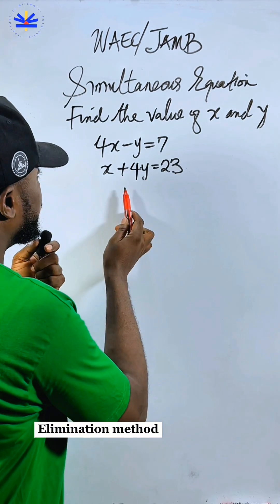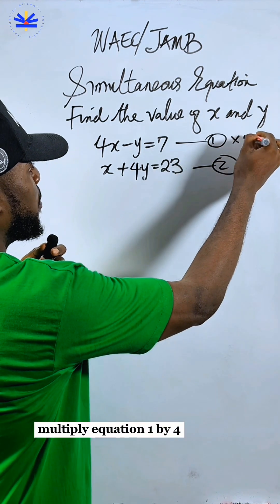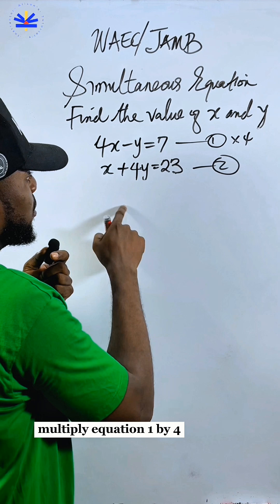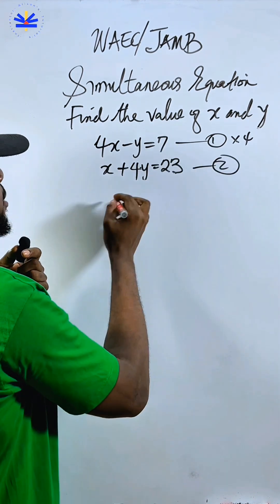Use elimination method. First of all, this one equation one, this one equation two. Multiply equation one by four. Because you know if you eliminate like this, nothing rhymes to eliminate. So you must multiply everything you have to give us.